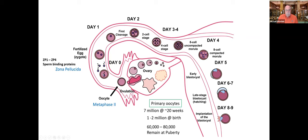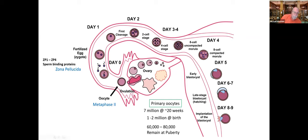If sperm are present, you will have fertilization. There are sperm binding proteins involved that bring the sperm in. If you haven't seen it, look up mammalian fertilization online — it's a massive process. The fertilization membrane forms very quickly, and part of its function is to stop secondary sperm invasions so that really only one sperm is pulled in.